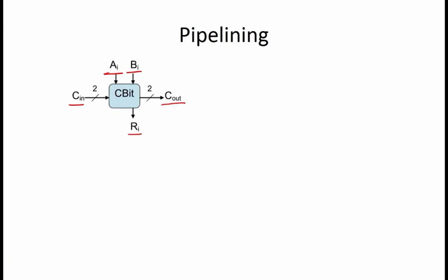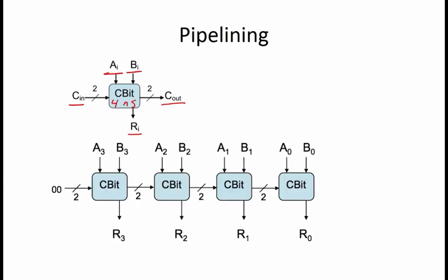The propagation delay of each C-bit module is 4 nanoseconds. The C-bit module is used to create a product MACC, which is a combinational device that determines the maximum of its two 4-bit unsigned binary inputs.